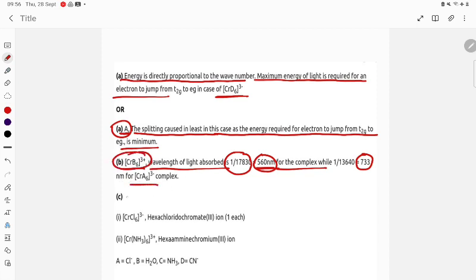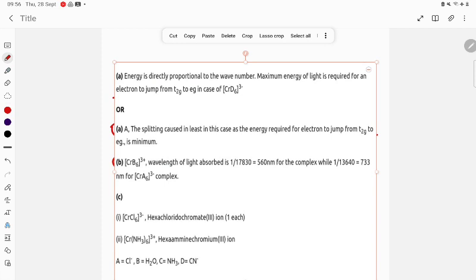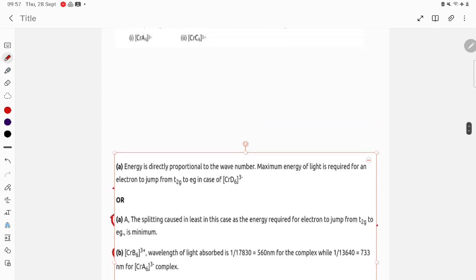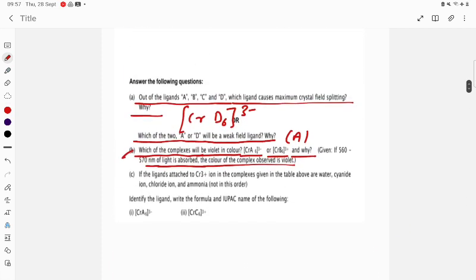So which is matching? B. Okay, so which one is correct? That is 560 nanometer, that is [CrB6]. The correct option will be [CrB6]³⁻ because its range is 560 to 570.